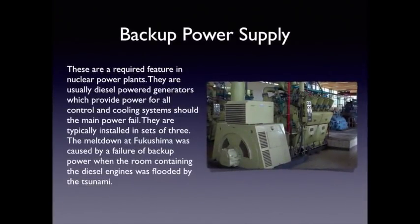The last feature common to every nuclear power plant is the backup power supply — one of the primary safety systems. They are usually diesel power generators providing power for all the control and cooling systems should the main power fail, and are typically installed in sets of three, so that if any one goes down, two are available to back up the power. The meltdown at the Fukushima nuclear plant in 2011 was caused by a failure of the backup power when the room containing the diesel engines was flooded by the tsunami that came after the earthquake.